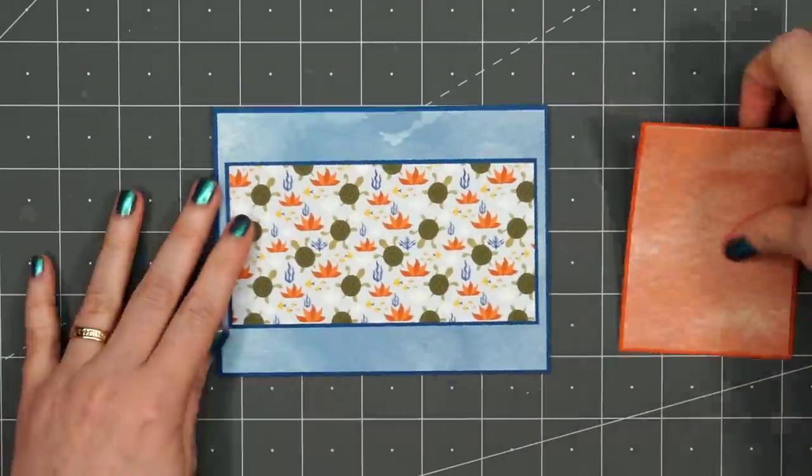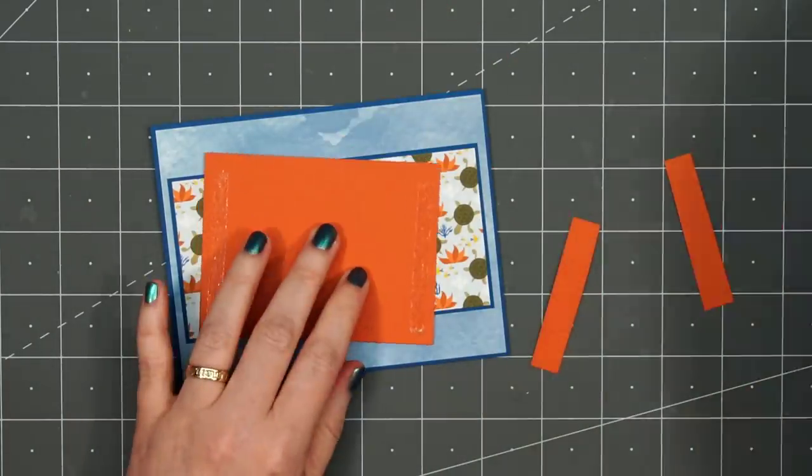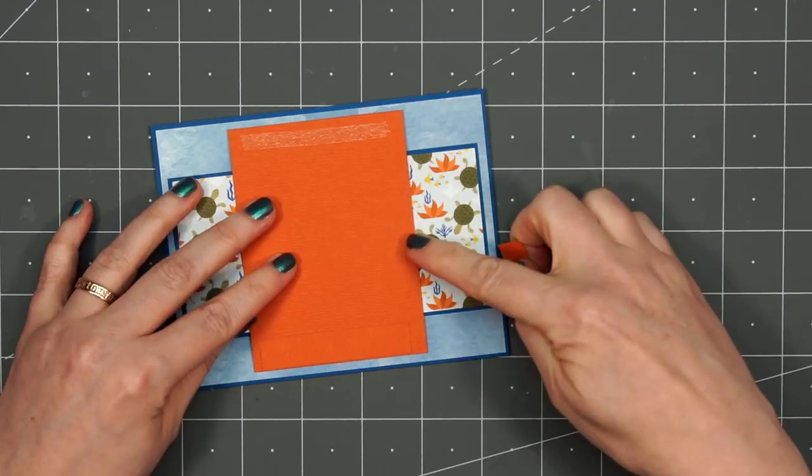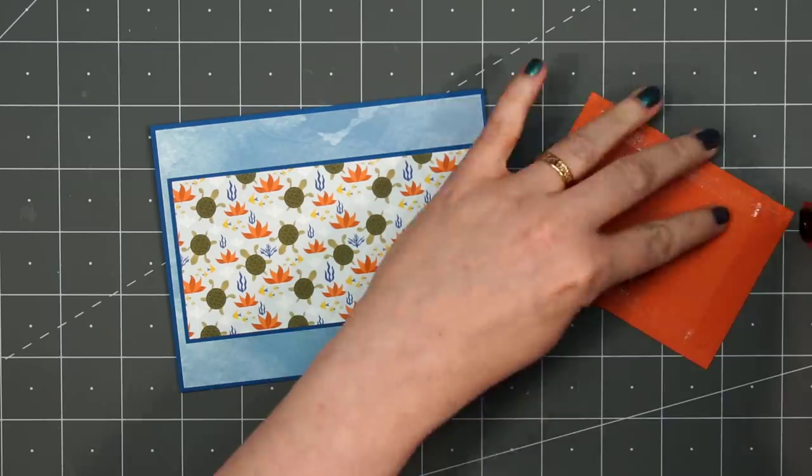I'm also not following the sketch measurements exactly. Instead of the fourth of an inch for those matted layers, I switched it to an eighth of an inch. I prefer the thinner layer, but if you like that wider matted layer, you can definitely use that fourth of an inch.